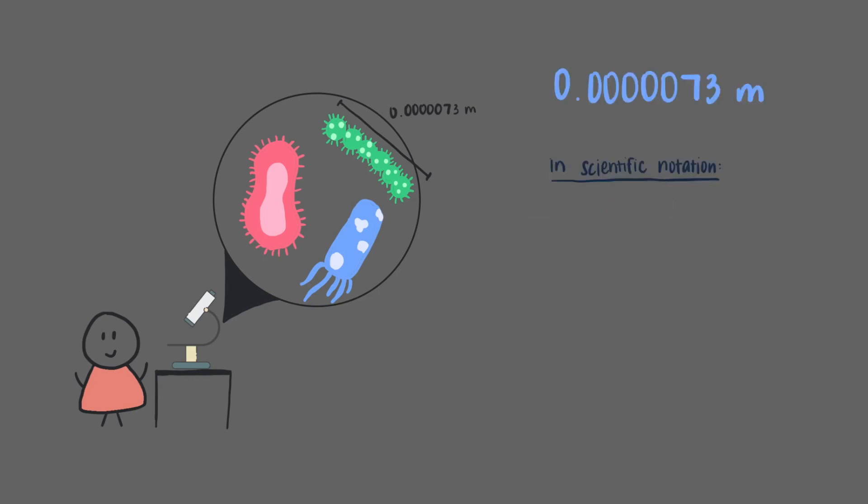In scientific notation, 0.000073 meters is expressed as 7.3 times 10 to the minus 6 meters. We move the decimal point 6 places to get a number between 1 and 10, and since the number is less than 1, the exponent on the 10 is negative 6.